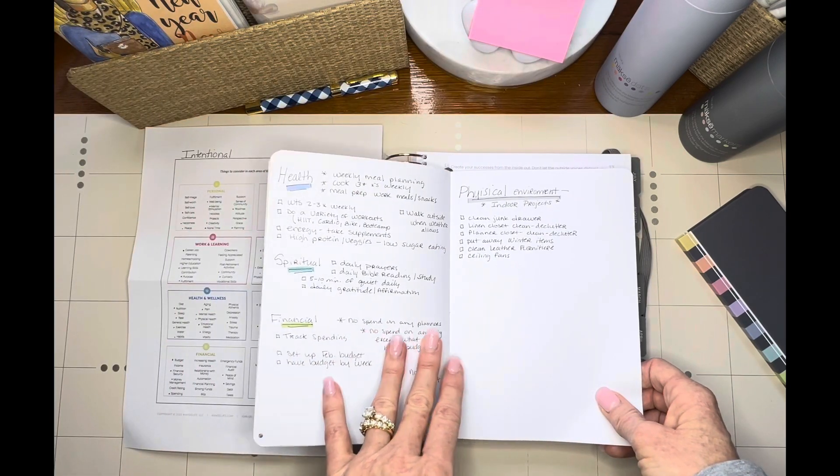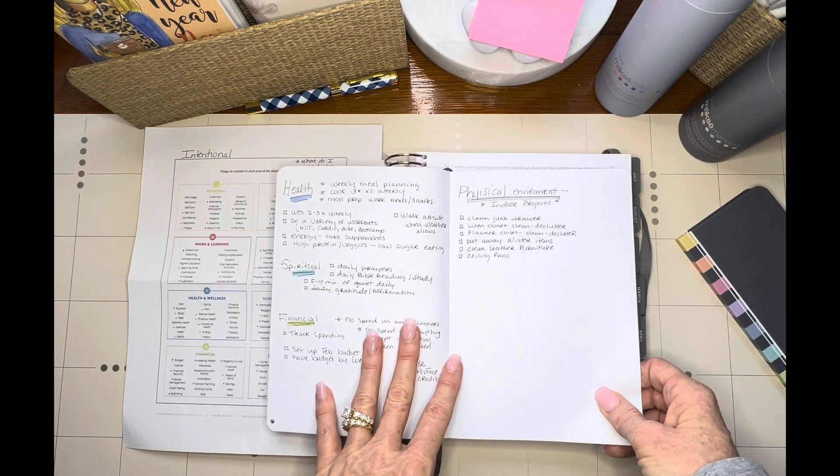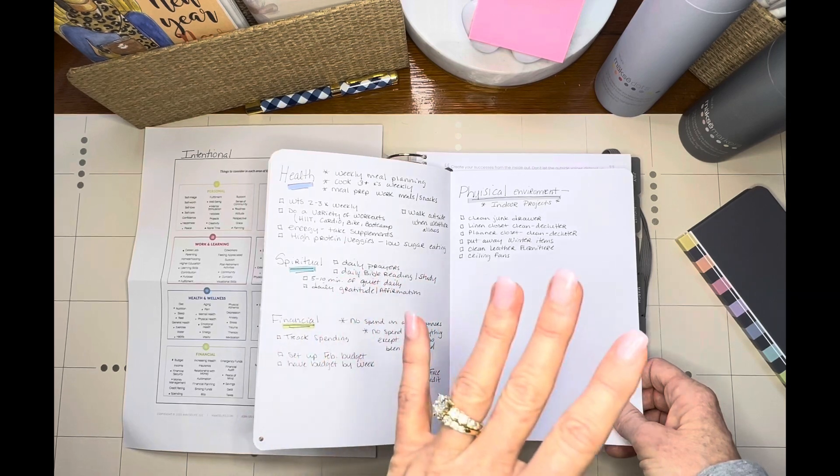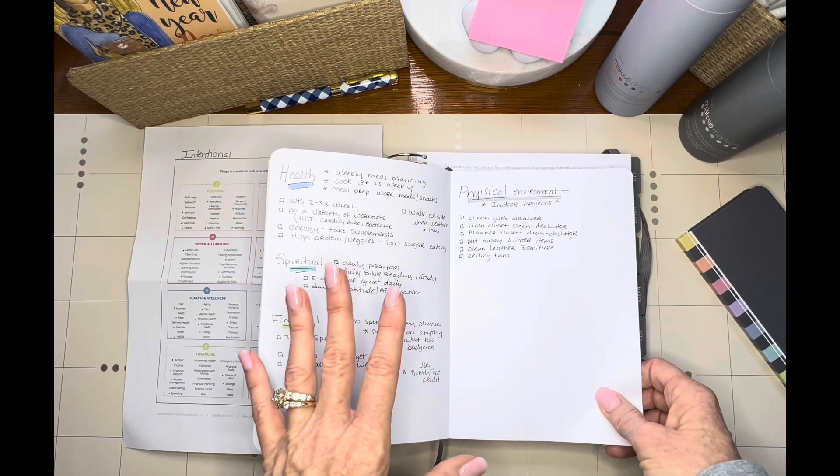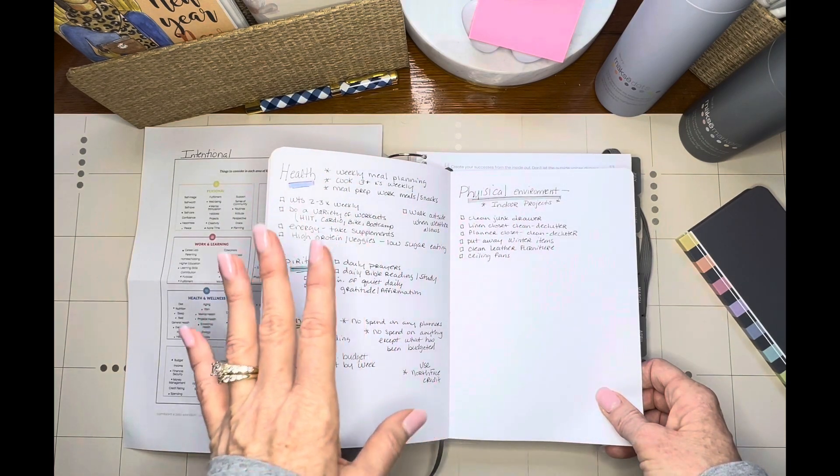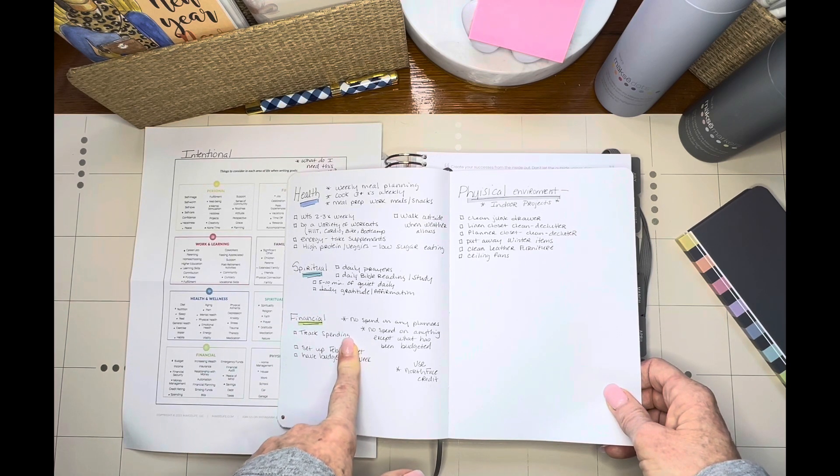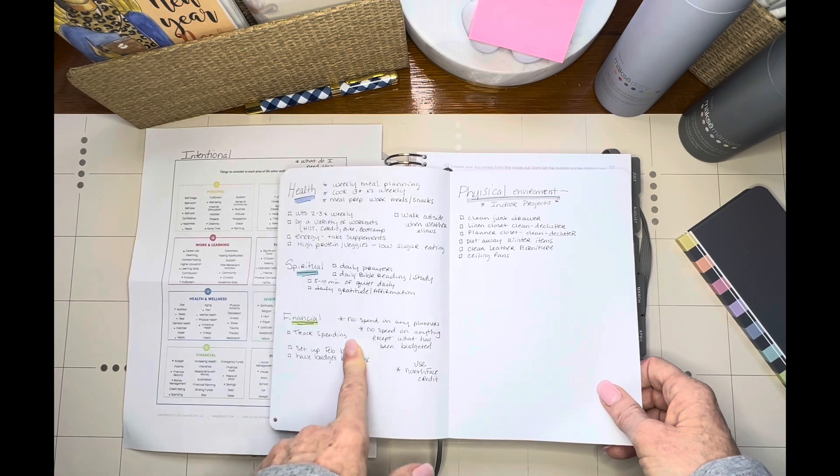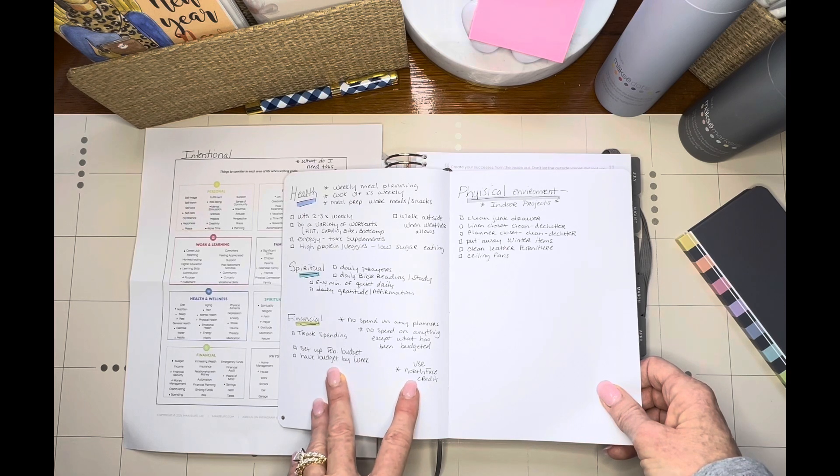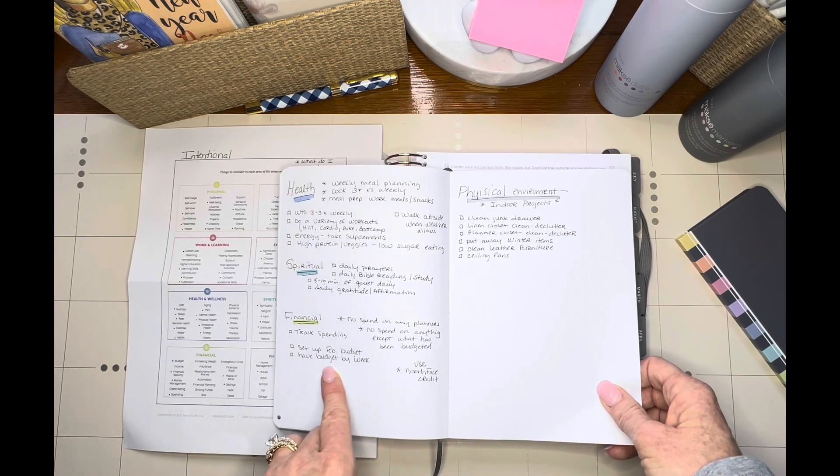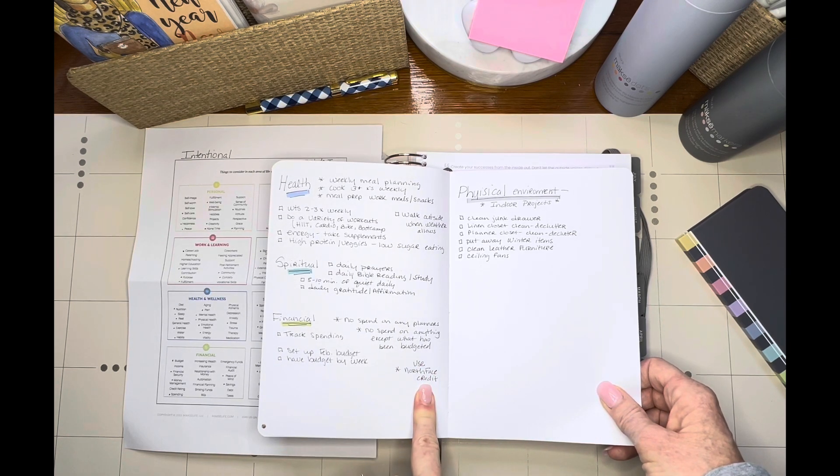Financial, I'm definitely on a no spend on any planner supplies. The only planner supplies I can get are ones that were planned or if the, like some of my favorite pens, I actually run out of, I will repurchase those. But I'm not buying another set of markers because they're pretty. I have so many on hand, I'm going to use what I have. I'm going to track my spending. I really want to make sure I know where my money's going. Hopefully that will help me identify where I really need to focus on even saving or being better about money. I'm going to set up my February budget and then each week I will check in and look over the budget for that week. We also have a North Face credit that I want to use before it expires.